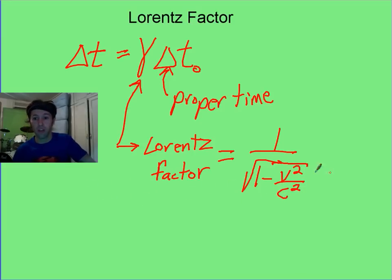Now, nothing is going to go faster than c, so this part on top here is always going to be slightly less than the denominator, and if you think about it, the Lorentz factor is always greater than 1.